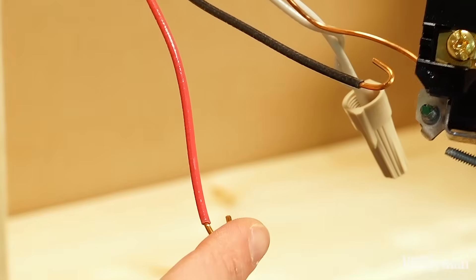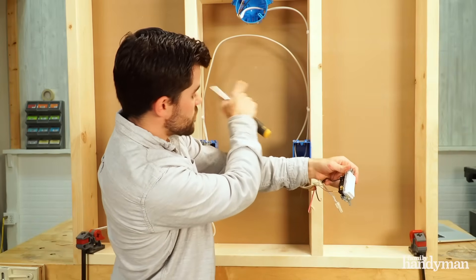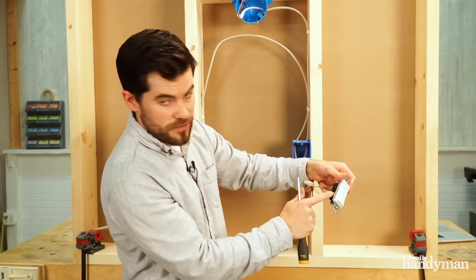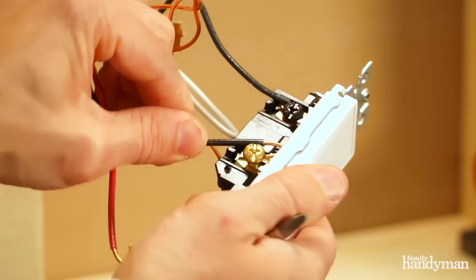Then the black and the red wire on the cable between the two switches gets attached to the traveler terminals on either side of the switch.